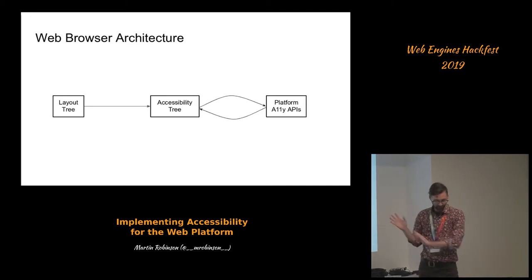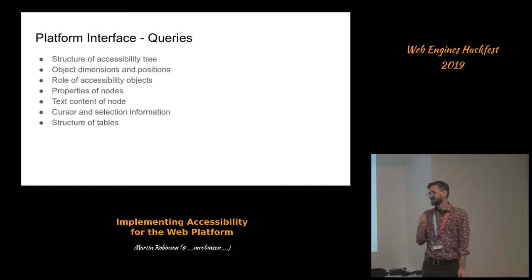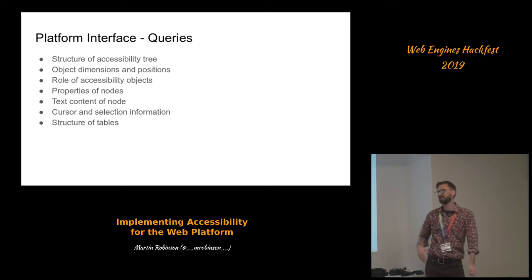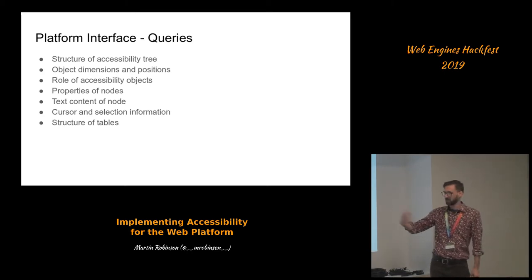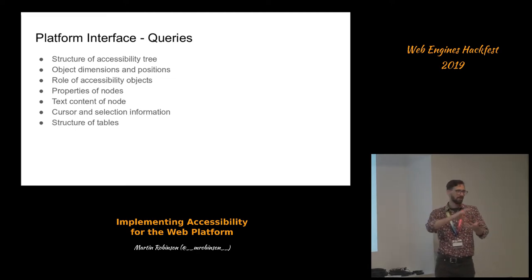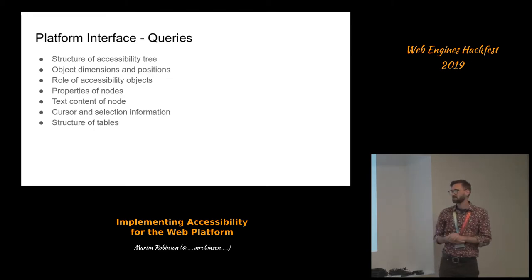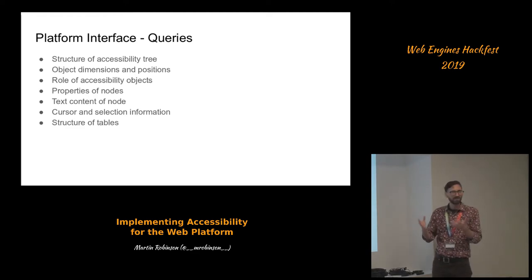So what does this look like? When we think about the data flow going from the assistive technology to the web browser, the kind of things the assistive technology might be asking about are the structure of the tree — what are the parents, what are the children, what is the relationship between the different objects? These would be objects on the page; divs and similar — the mapping's not one-to-one, but it has a very similar shape.